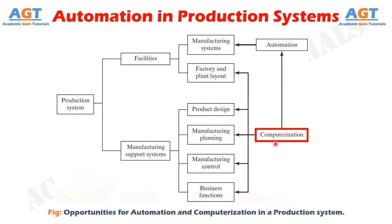True CIM involves integrating all of these functions in one system that operates throughout the enterprise. Other terms are used to identify specific elements of the CIM system. For example, computer-aided design (CAD) supports the product design function. Computer-aided manufacturing (CAM) is used for functions related to manufacturing engineering, such as process planning and numerical control part programming. Some computer systems perform both CAD and CAM, and so the term CAD/CAM is used to indicate the integration of the two into one system.